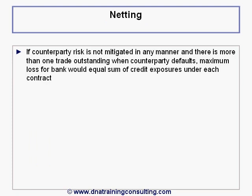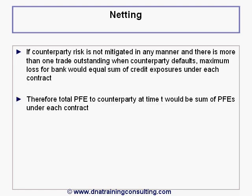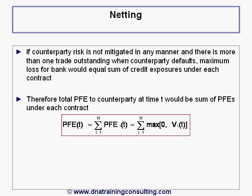In general, if counterparty risk is not mitigated in any manner, and there is more than one trade outstanding when a counterparty defaults, the maximum loss for the bank would equal the sum of the credit exposures under each contract. Therefore, the total PFE to the counterparty at time t would be set as the sum of the PFEs under each contract, as shown in this equation, where v_i(t) is the value of contract i at time t.